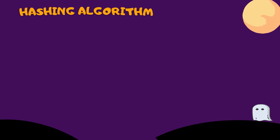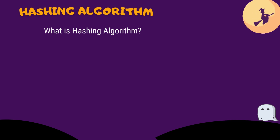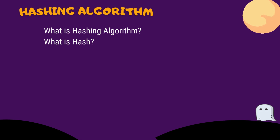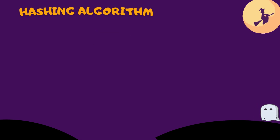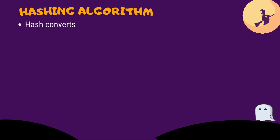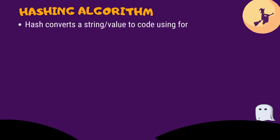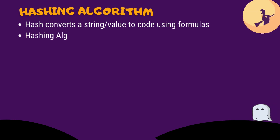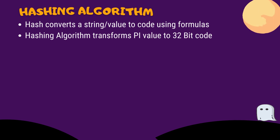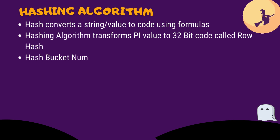You would have noticed I used the keyword 'hashing algorithm' while explaining the INSERT row in the AMPs module. So what is a hashing algorithm? Before that, what is a hash? Hash in the computer field is to transform a given string or value into a complex code through some formulas. A hashing algorithm is then used to hash or transform the primary index value — in our case, Jack.